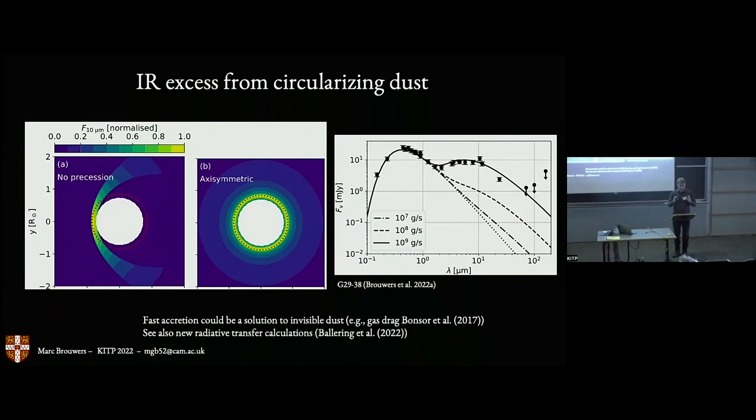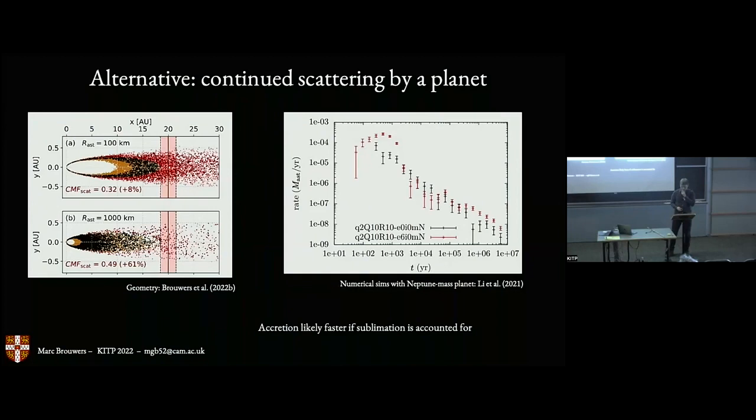We also have to keep in mind that most polluted white dwarfs do not show an infrared excess. You have to be able to simultaneously explain why some do have an excess and others do not. One potential solution is that perhaps gas drag is just a little bit more efficient around some stars and less efficient around others. Because if you have much more efficient drag, then any particular dust grain just spends less time accreting onto the white dwarf, has less time to emit infrared photons, and you might not observe this. Then of course you need some distribution of drag efficiency, for instance through a distribution of the amount of dust or gas present around these white dwarfs.